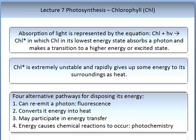Chlorophyll absorbs light and enters a higher energy or excited state. In this excited state it is extremely unstable, which allows it to give up energy readily to its surroundings as heat. There are four alternative pathways for disposing of this energy: it can re-emit a photon (fluorescence), convert the photon energy into heat, participate in energy transfer — remembering that energy is never lost, only transferred — or fourthly, the energy causes chemical reactions, which is photochemistry.